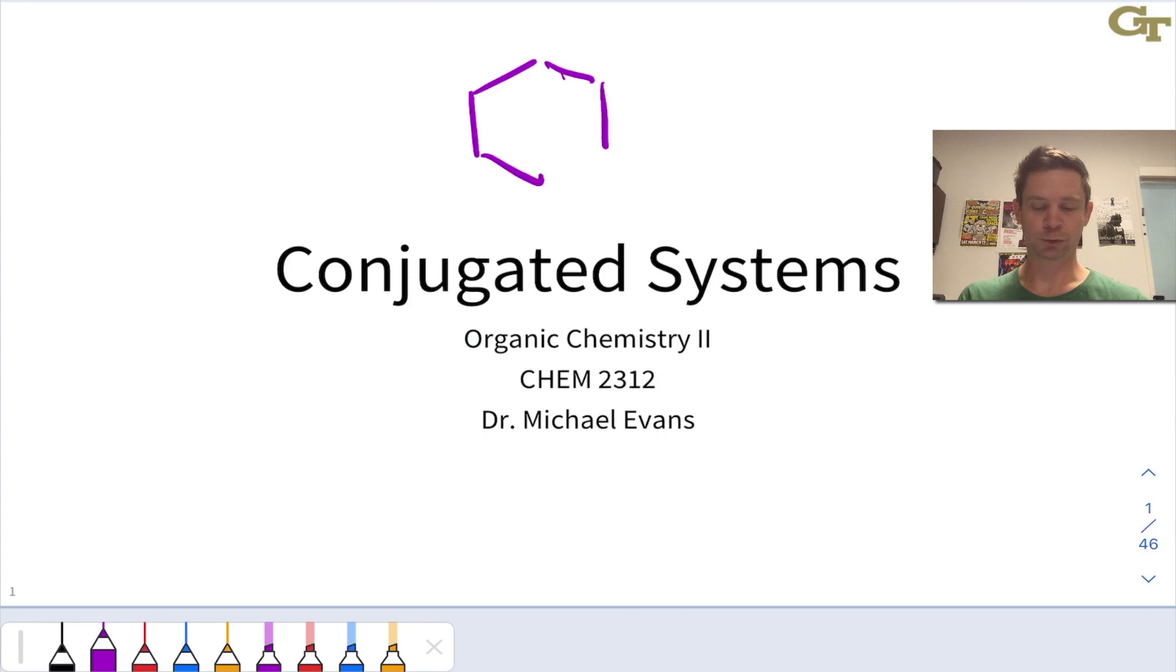For example, benzene, one of the most famous molecules in all of organic chemistry, is the prototypical aromatic compound. We'll learn how to recognize these and move into their reactivity in a future chapter.